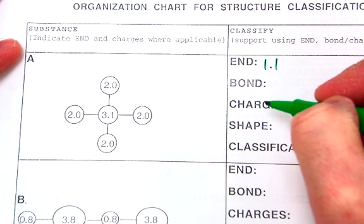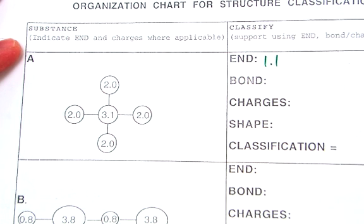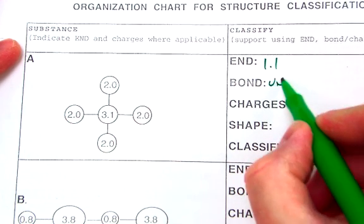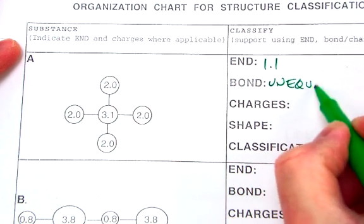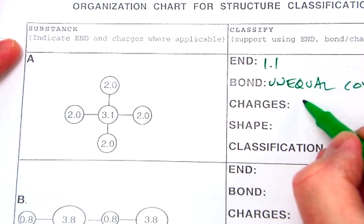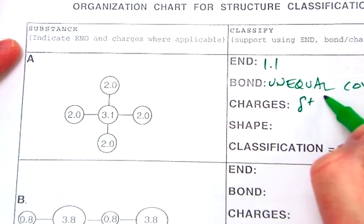Now, when you look on your continuum for what type of intramolecular bond, that's going to be unequal covalent. And unequal covalent means you have partial charges, partial positive, partial negative.